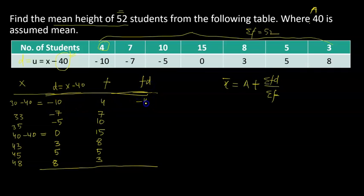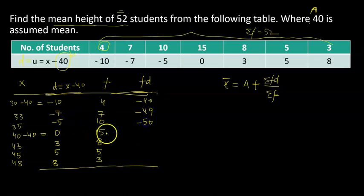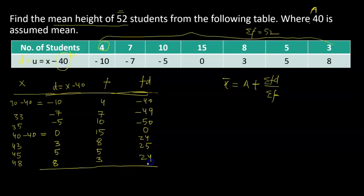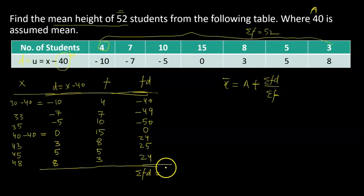Calculating fd: negative 10 times 4 is negative 40; negative 7 times 7 is negative 49; negative 5 times 10 is negative 50; 15 times 0 is 0; 8 times 3 is 24; 5 times 5 is 25; and 8 times 3 is 24. So the summation of fd gives me negative 66. The sum of f is exactly 52.